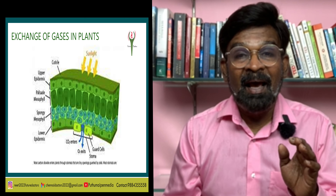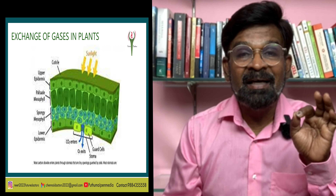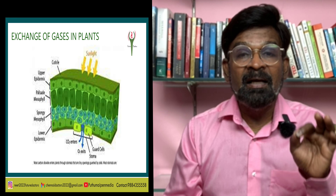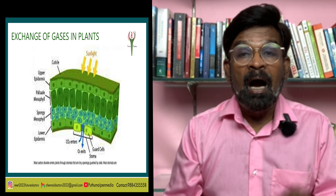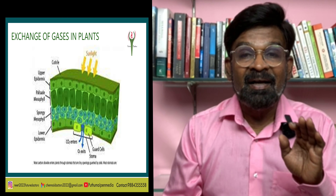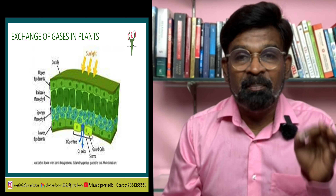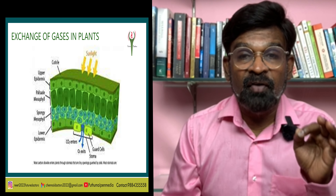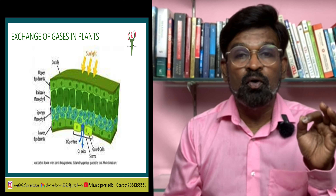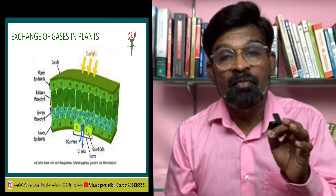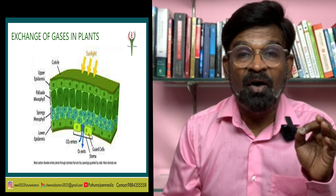Plants take up oxygen and release carbon dioxide. Plants have stomata and lenticels for gaseous exchange instead of specialized respiratory organs like those in animals. Every part of the plant has the ability to take care of its own needs for gas exchange, and very little transport of gases occurs from one part of the plant to another.